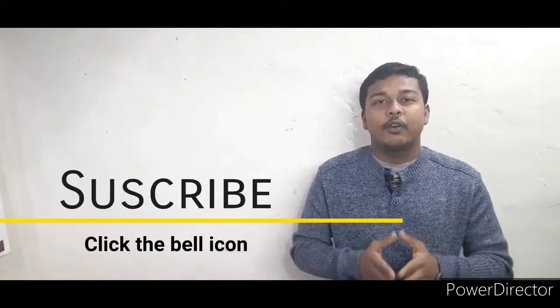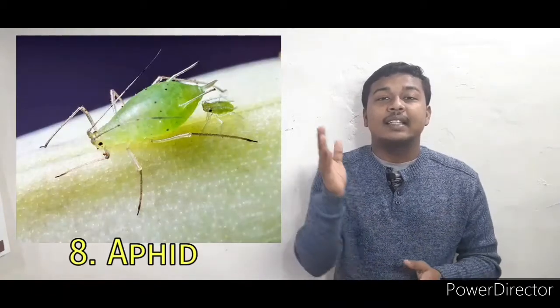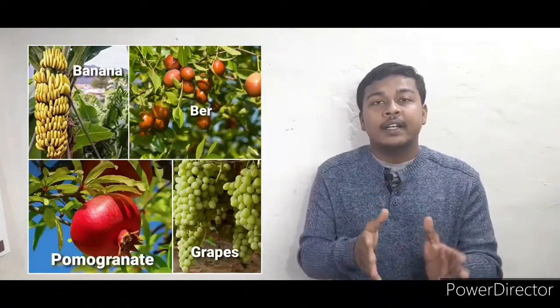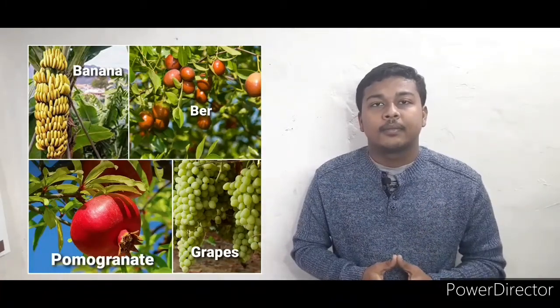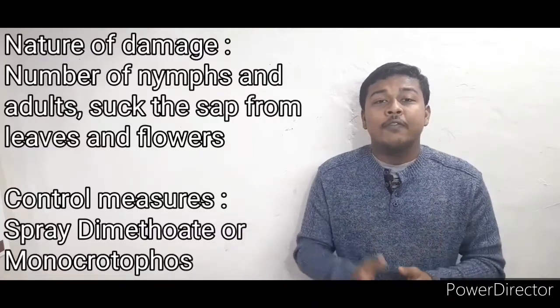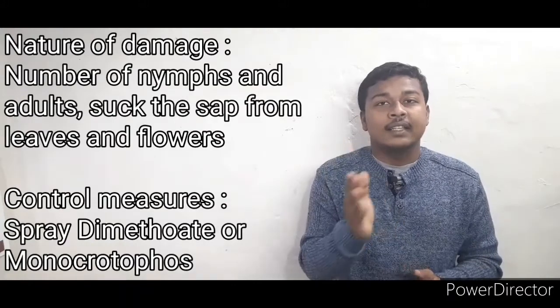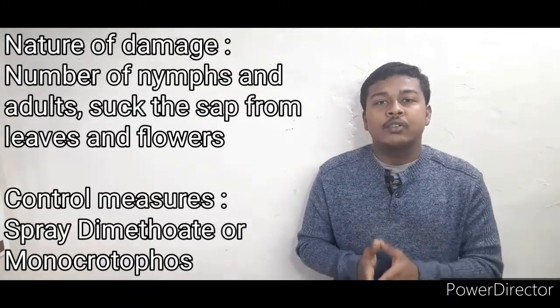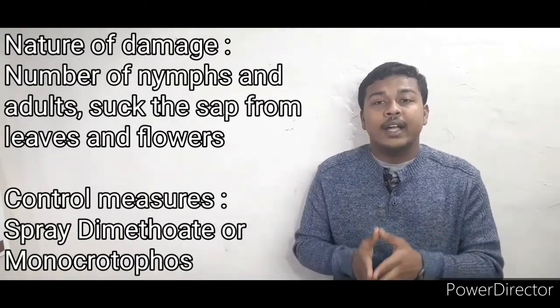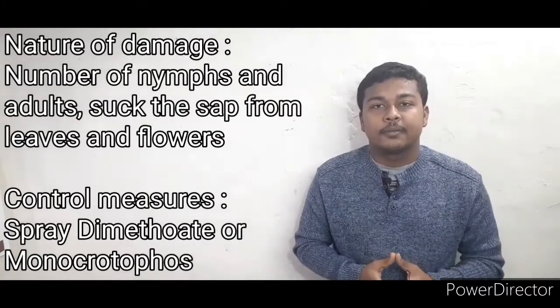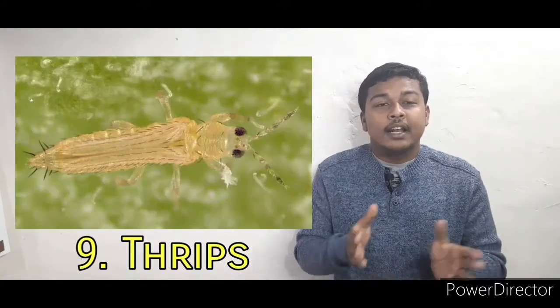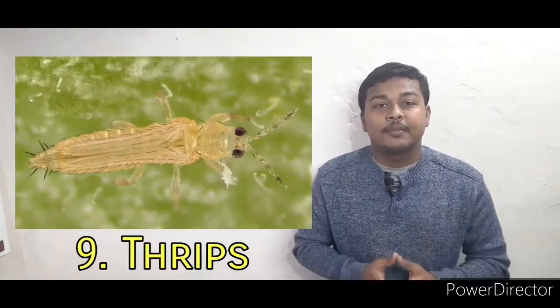The next pest is the aphid. The affected crop plants are pomegranate, grapes, banana, and pear. A large number of nymphs and adults suck the sap from the leaves and flowers. To control this, spray dimethoate or monocrotophos.